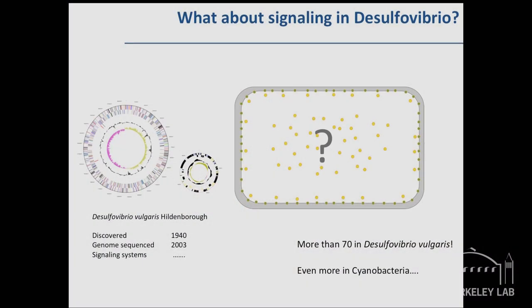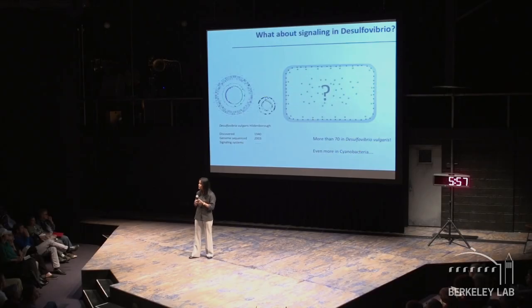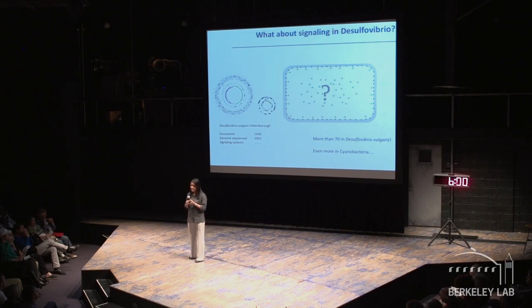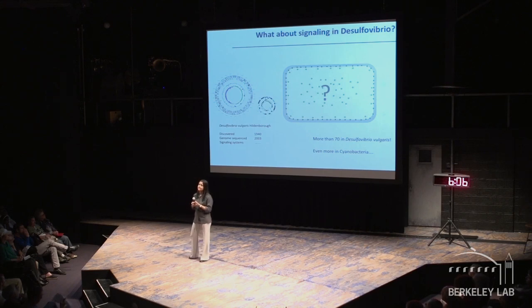To give you an example of Desulfovibrio vulgaris, my favorite organism, it was discovered in 1940, maybe 30 years before I was born. Its genome sequence has been known for the last 10 years. And astoundingly, even though it is the focus of a lot of different studies that focus on understanding how it will respond in the environment, applications designed around its activity, its signaling systems, until very recently, were completely unknown. So this is the knowledge gap that we are trying to bridge here. This is the gap in knowing what it can do and what it will do to be able to predict.